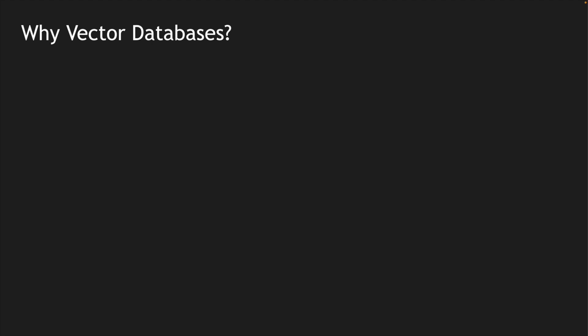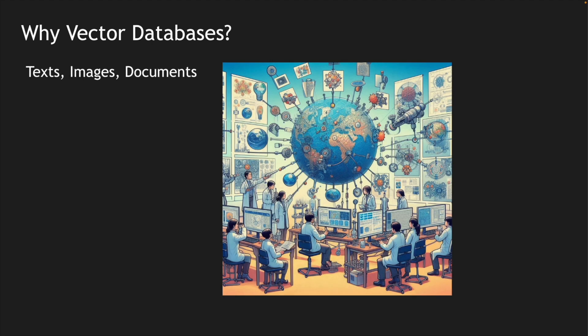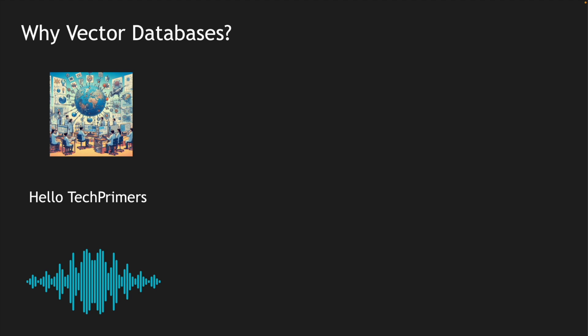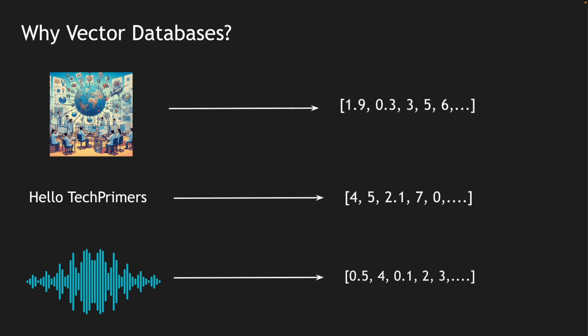In vector databases, in addition to text we also have images, documents, and videos. We convert these resources into something called vector embeddings and store them within the database. In order to store these different types of files and data, we need to convert them into a universal format — that's where vector indexes come in. Images, text, audio, video — anything gets converted into vector format so that you can search them, link them, and build relationships between different content.